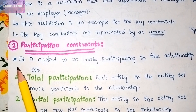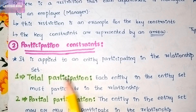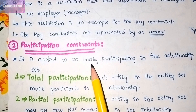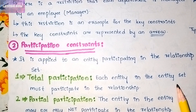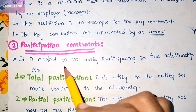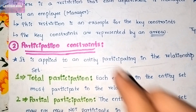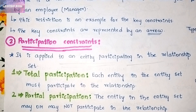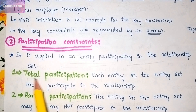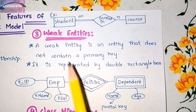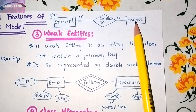Next we have participation constraints, which are of two types: total participation and partial participation. Participation constraints are applied to an entity participating in a relationship set. In total participation, each entity in the entity set must participate in the relationship — represented by double lines. In partial participation, the entity may or may not participate in the relationship — represented by a single line.